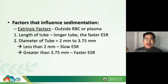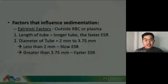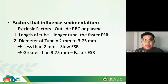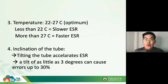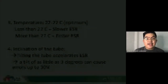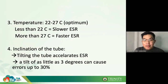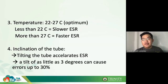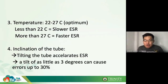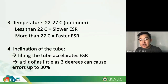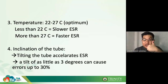Temperature: the optimum is 22 to 27 degrees Celsius — room temperature. Below 22 degrees, ESR slows down; above 27 degrees, ESR speeds up. Temperature is directly proportional to ESR rate — the higher the temperature, the faster the ESR; the lower the temperature, the slower the ESR.